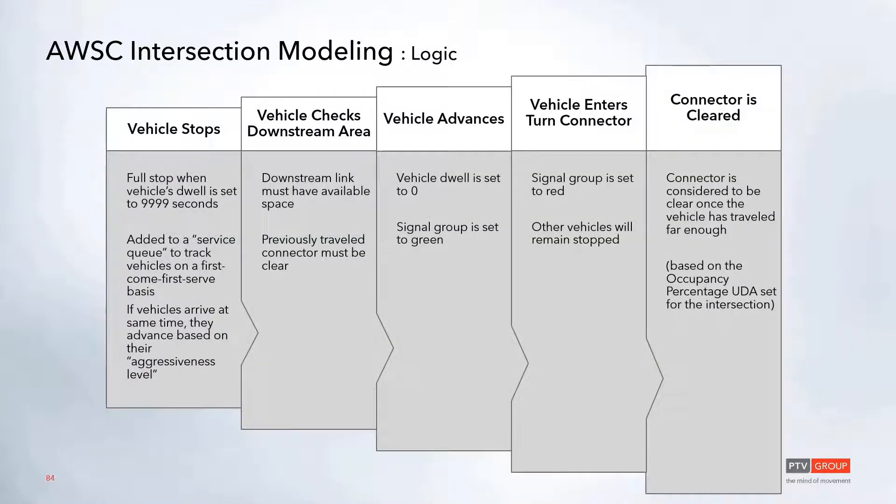Essentially how the logic works: a vehicle will stop at the stop sign and its dwell time will get set to that super high value. At that point, the vehicle will get added to a service queue list, so that way we can track when the vehicles arrived and we can service them on a first-come, first-served basis. Now, if the vehicles do arrive at the exact same time, then they will be placed in that queue based on that aggressiveness level UDA that we set up earlier.